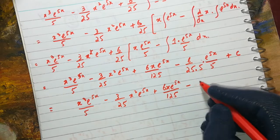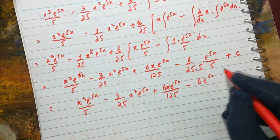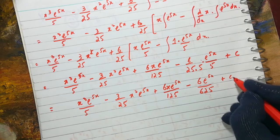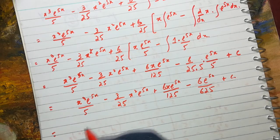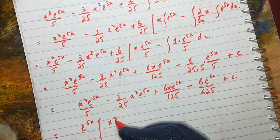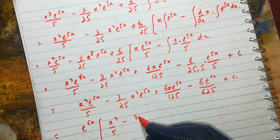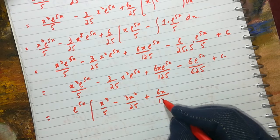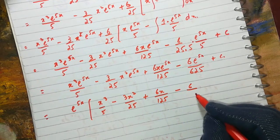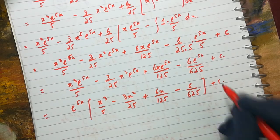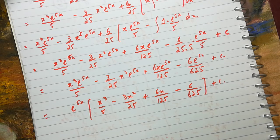The denominator becomes 125, and multiplying again by 5 gives 625, plus C. Taking e^(5x) as a common factor, the final answer is: e^(5x) times [x³/5 minus 3x²/25 plus 6x/125 minus 6/625] + C. This is the answer. If you like the video, please subscribe to the channel for more videos.